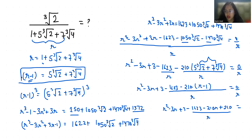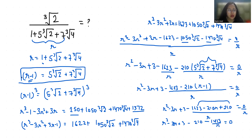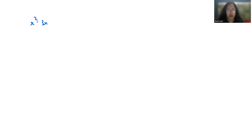When we solve this we get R squared minus 3R plus 3 minus 210, then we cancel R, giving minus 1413 over R equals 0. So R squared minus 3R plus 3 minus 210, which is minus 207, equals 1413 over R.